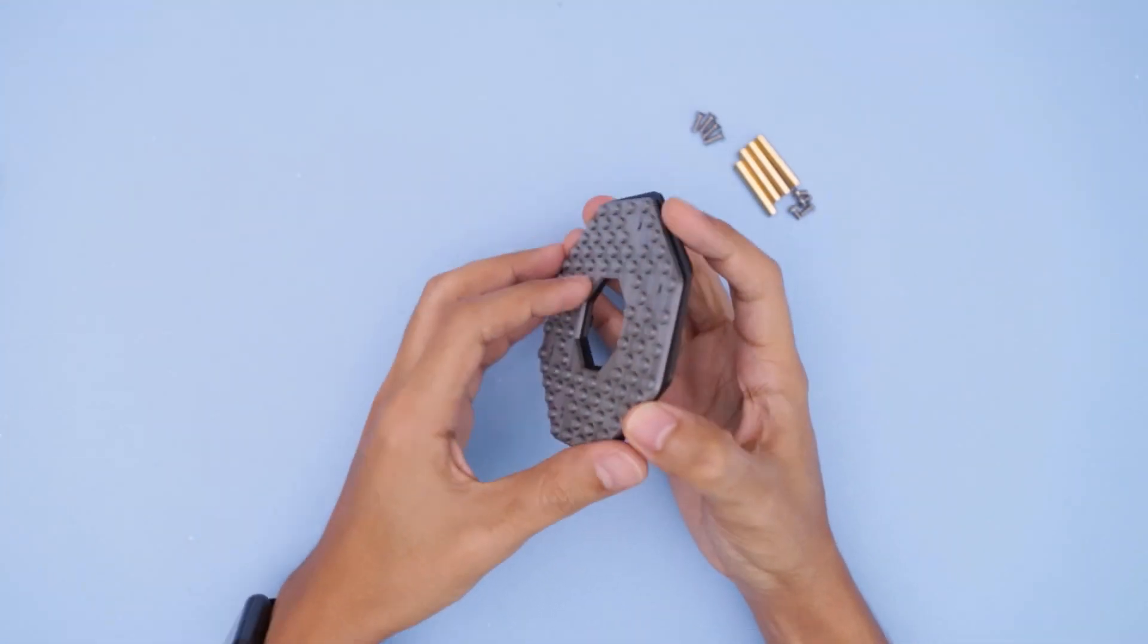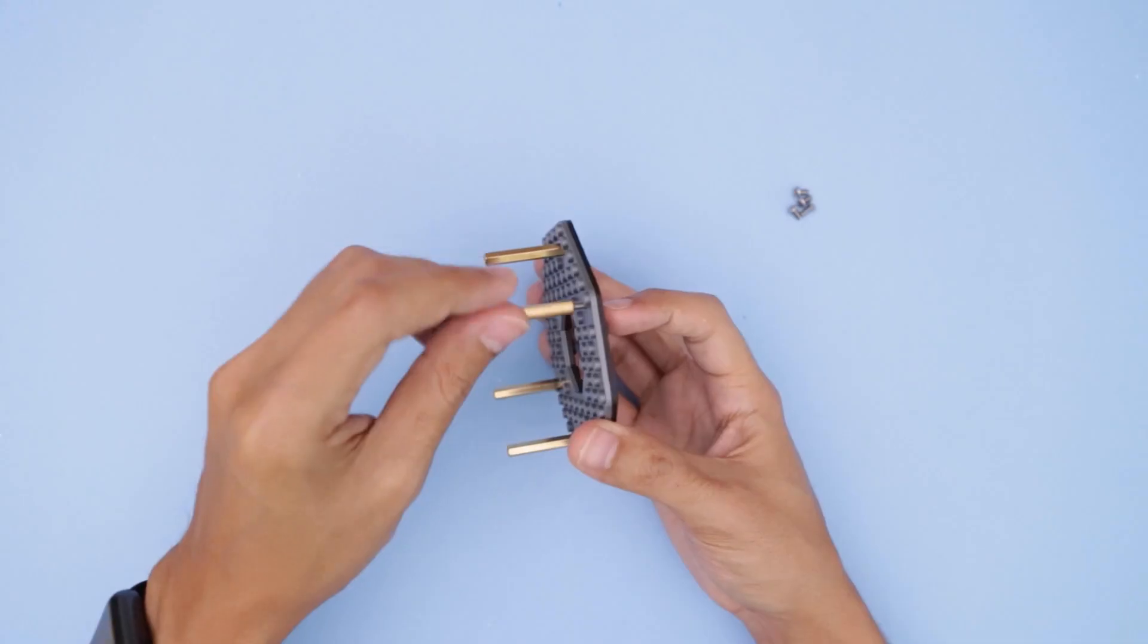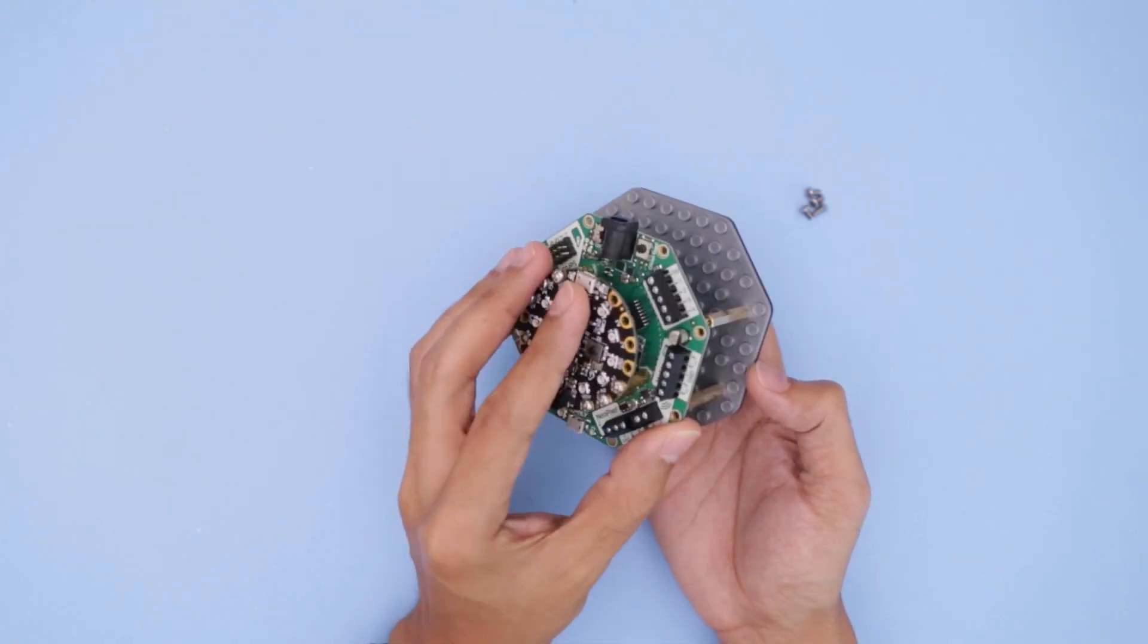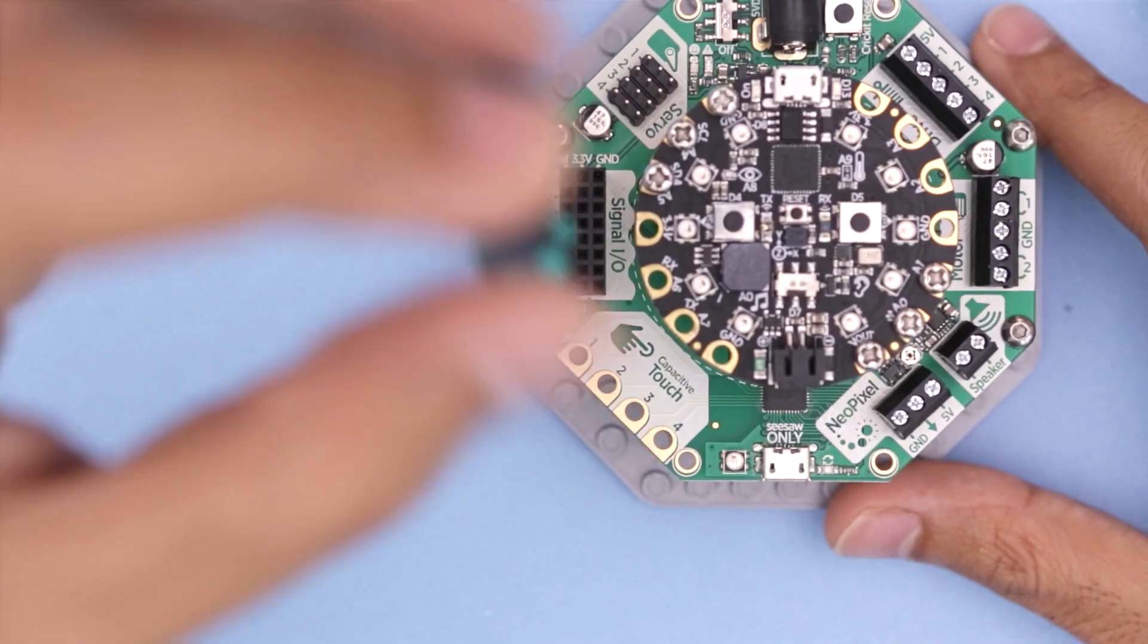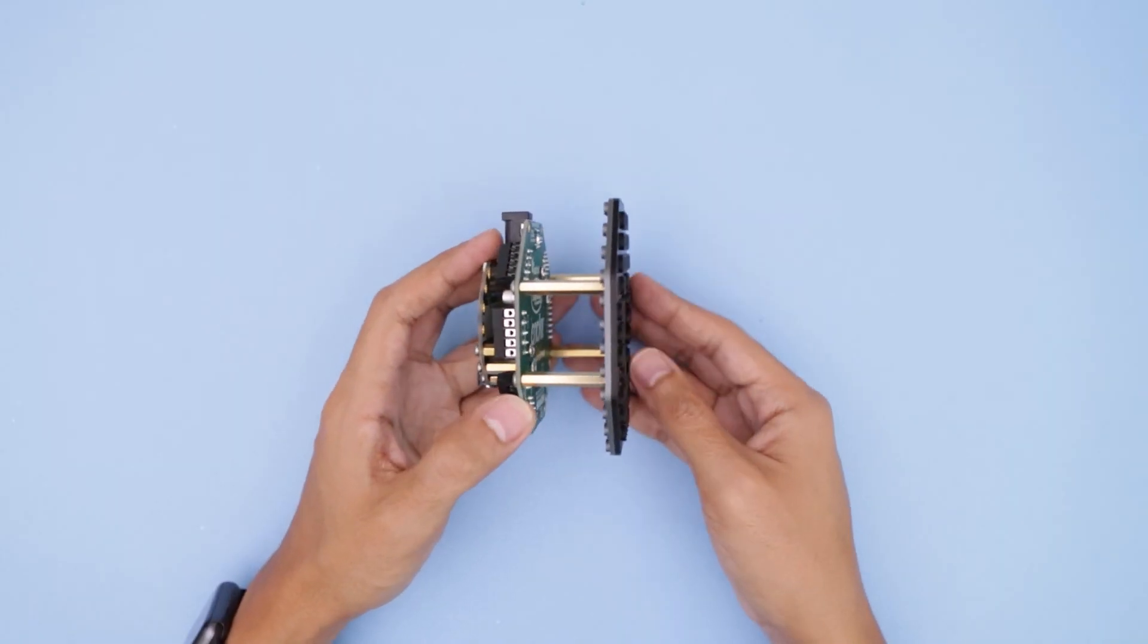Start by joining the two base plates together with machine screws. These tall standoffs will elevate the Cricket board. Line up the mounting holes and secure the PCB to the standoffs with additional screws. The base plate provides structural support and has features for attaching Lego bricks.